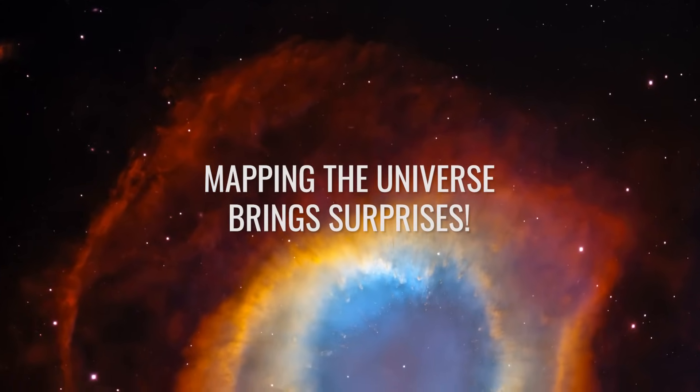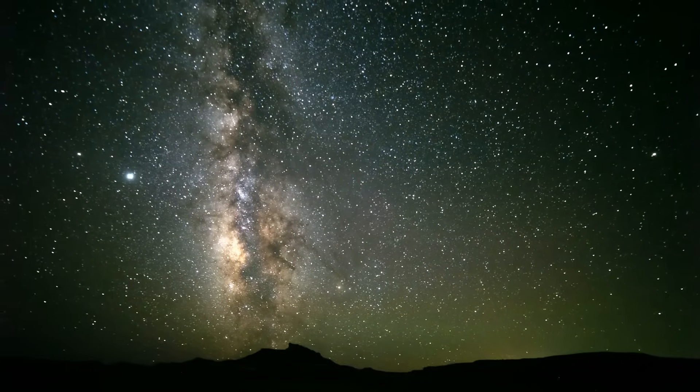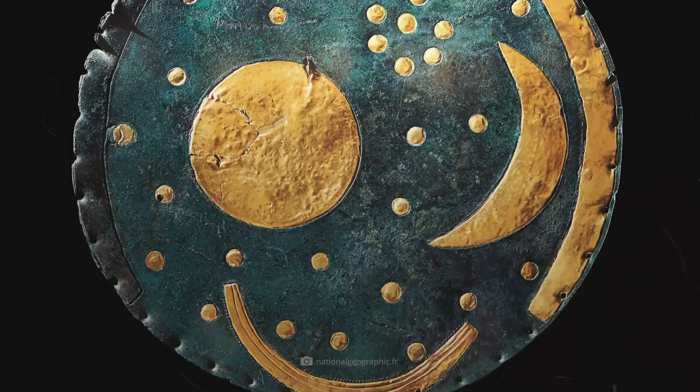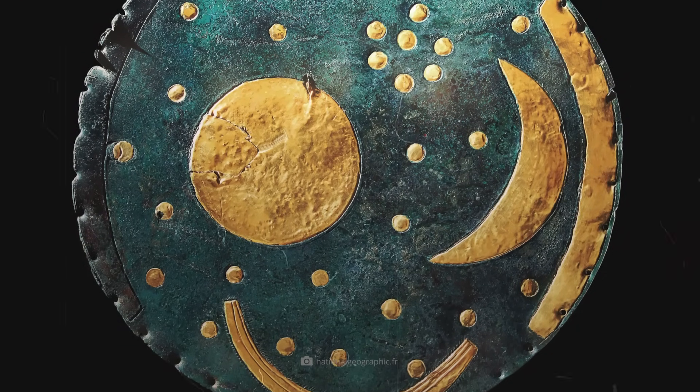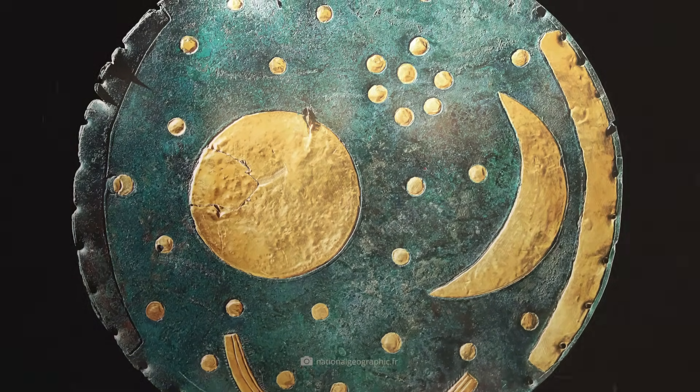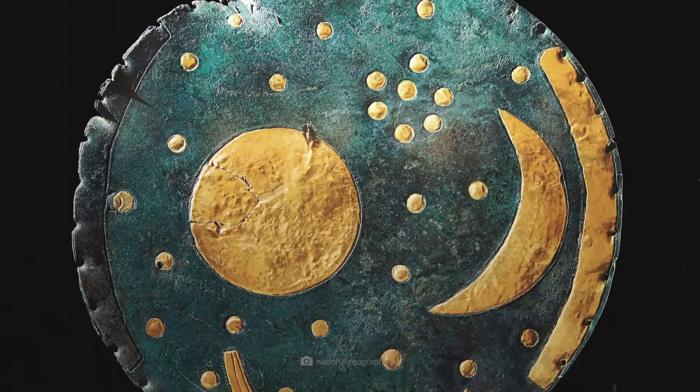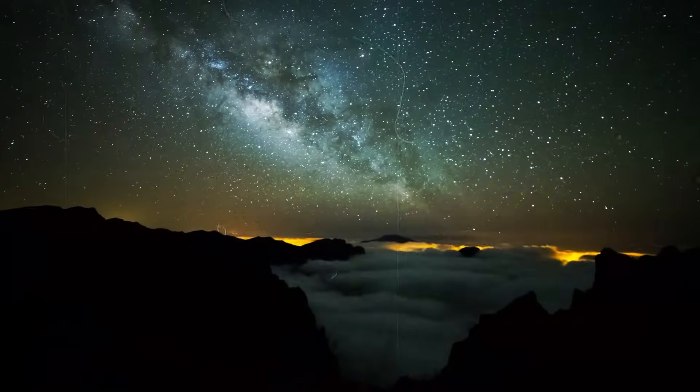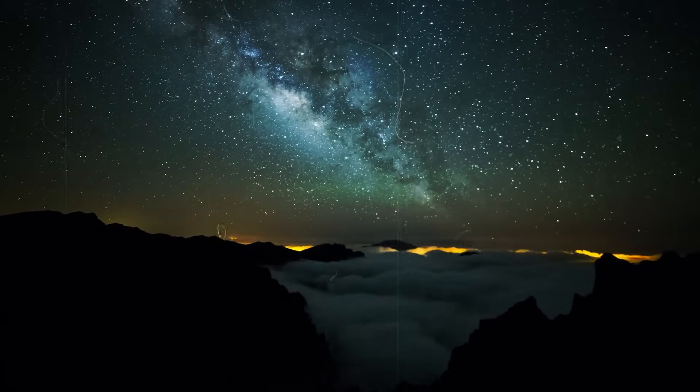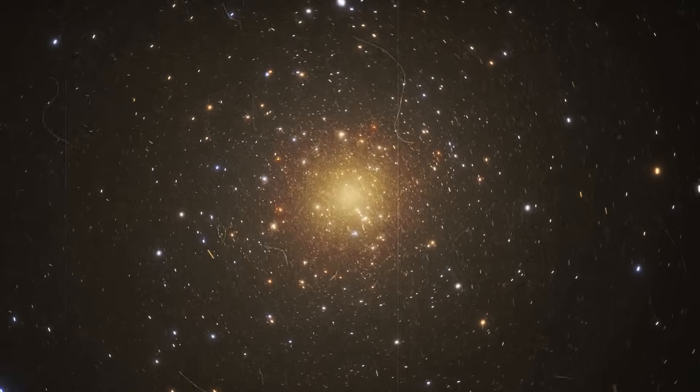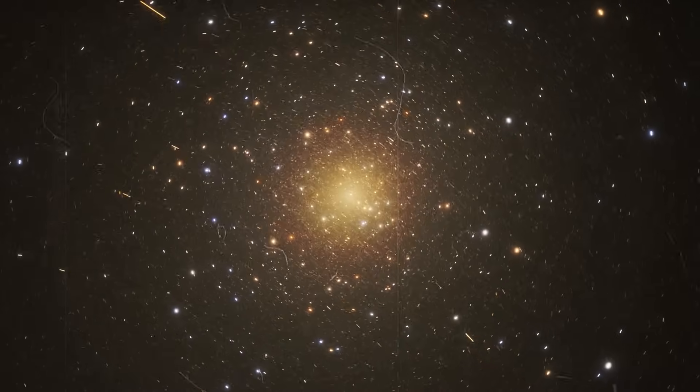Mapping the Universe Brings Surprises. The oldest maps of the universe are 5,000 years and older. Probably the oldest map of the sky is the Nebra Sky Disk, which was made by our ancestors many thousands of years ago. It shows the sun, the moon and very probably the Pleiades. Artifacts like this lead us to wonder how our ancestors perceived the cosmos and why some stars were so important to them that they gave them special worship.